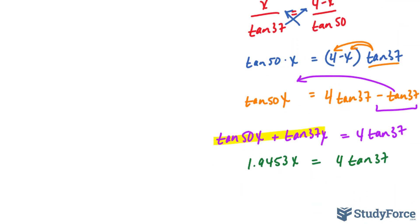1.9453 x is equal to the right side. And as our last step to solve for x, we divide both sides by that value we just found. So 4 tangent 37 divided by what we just found. And that is approximately 1.55. 1.55 is the value of x. And placing that into there and subtracting 4 minus 1.55 is 2.45.